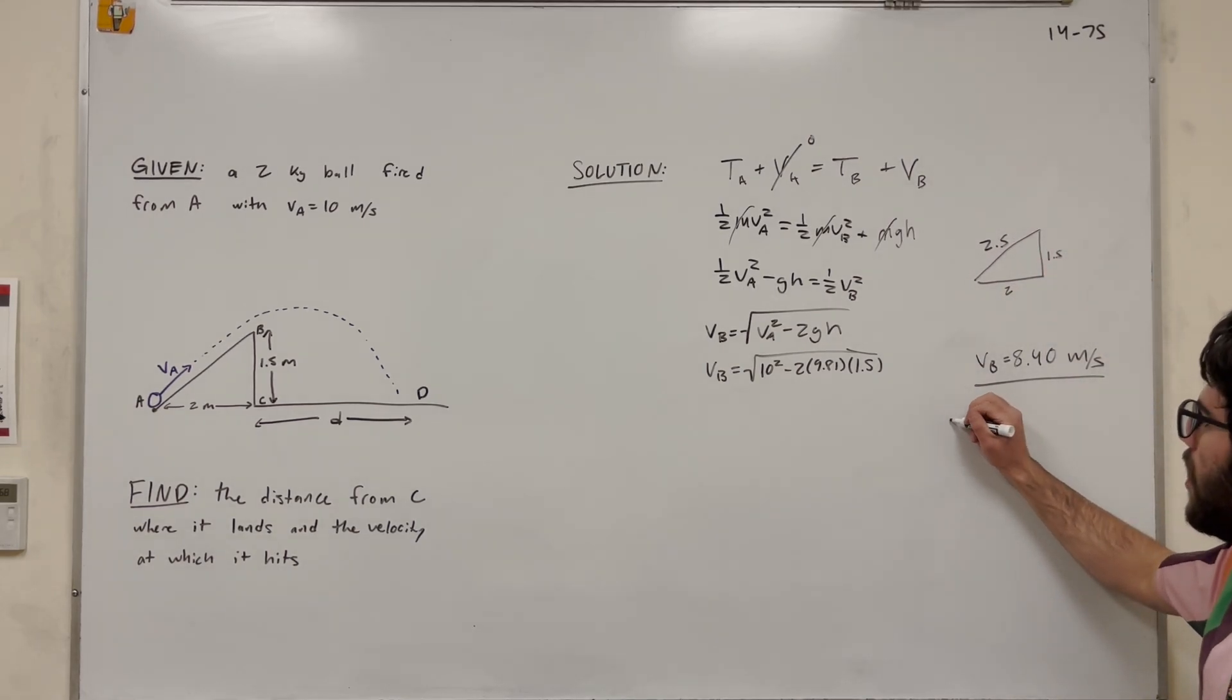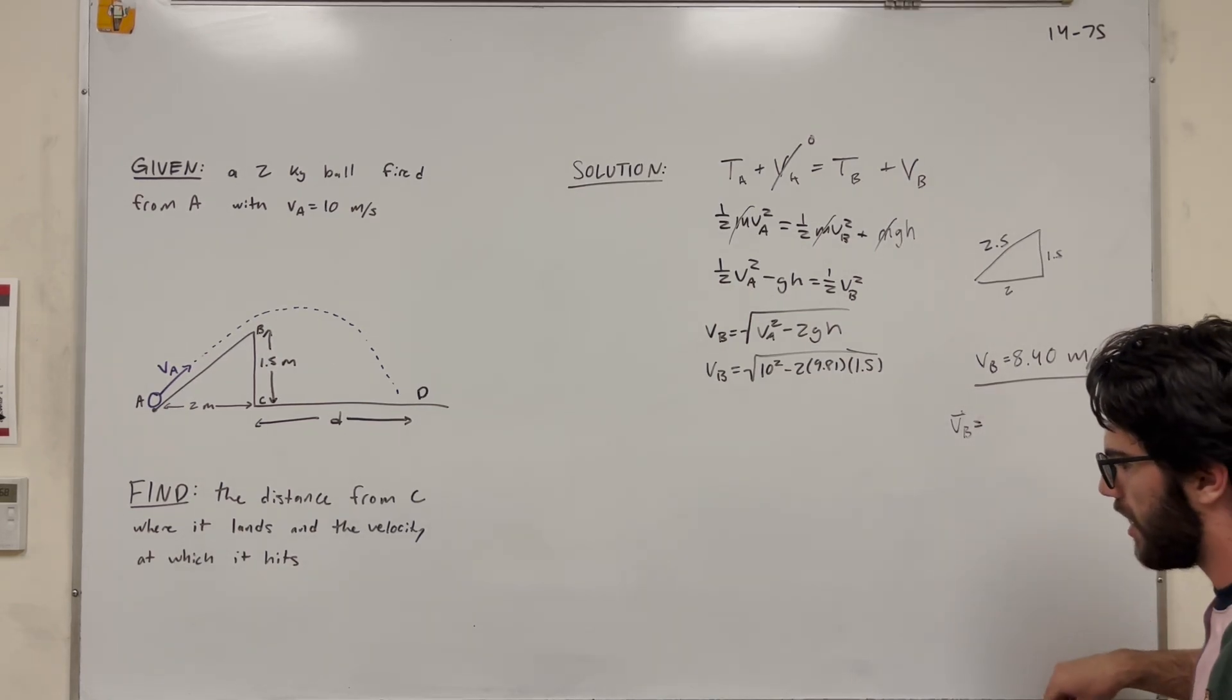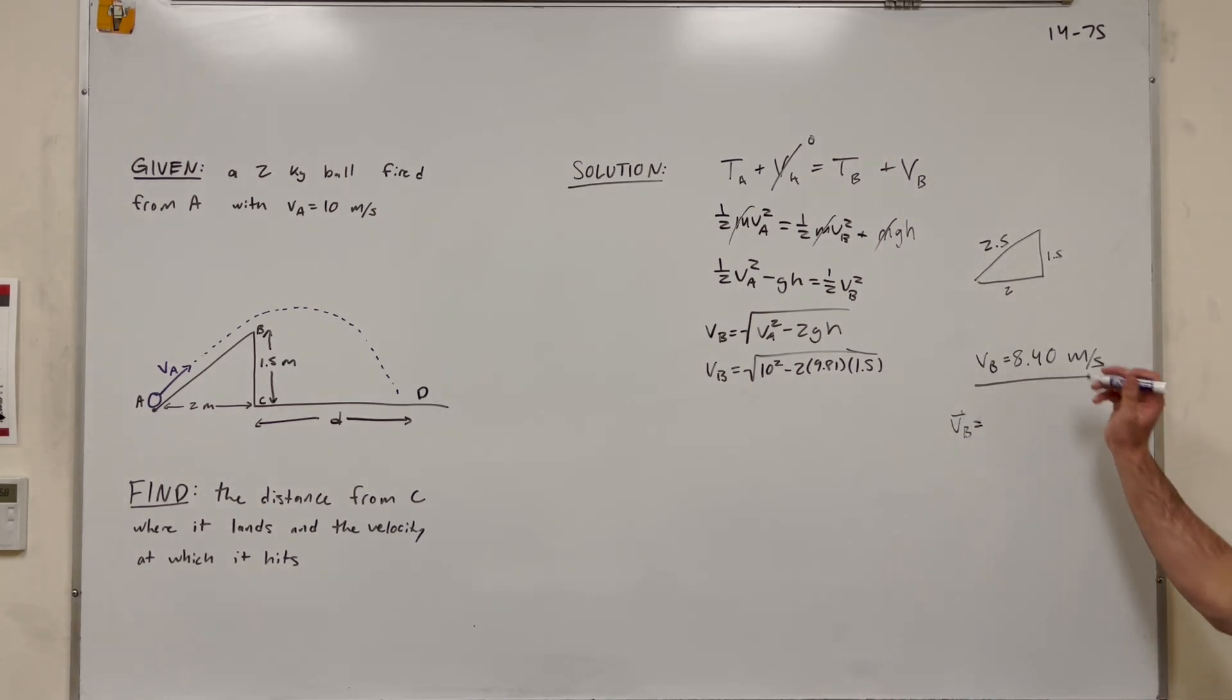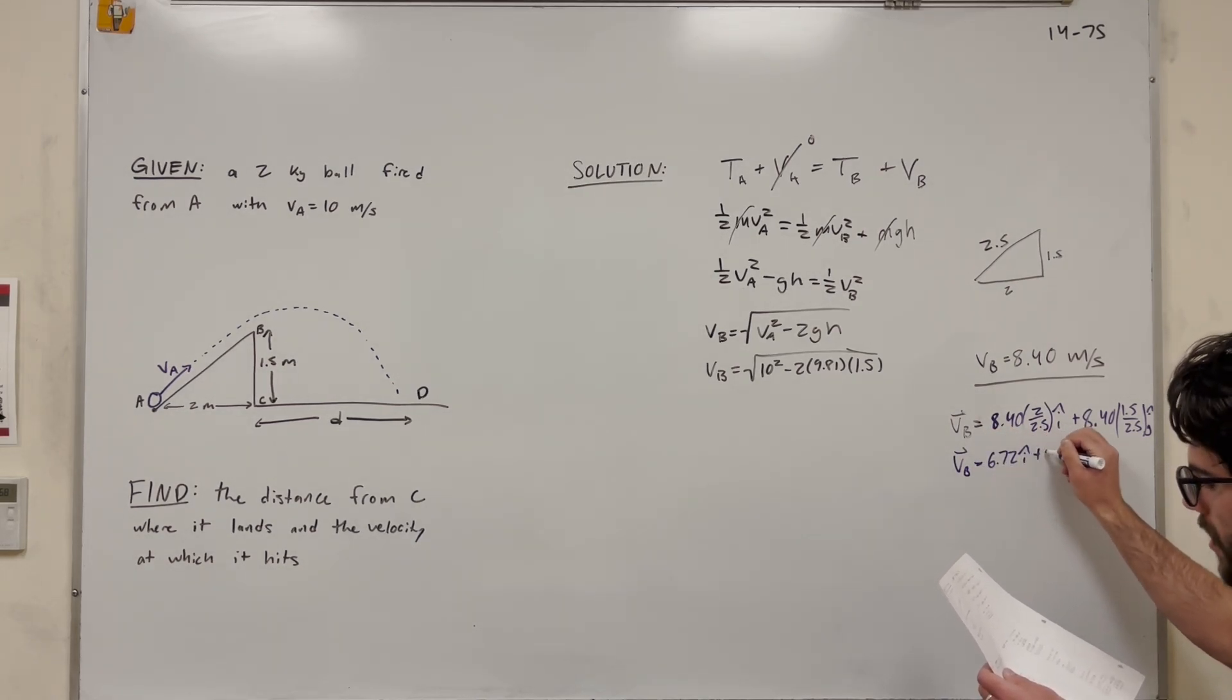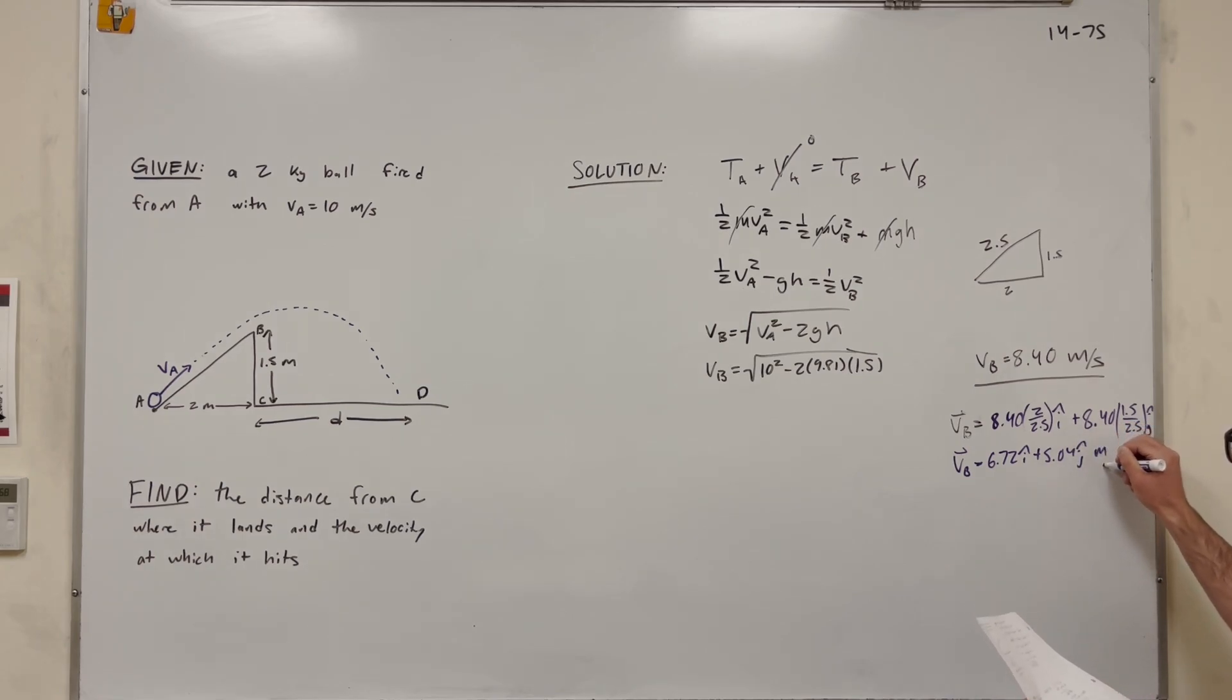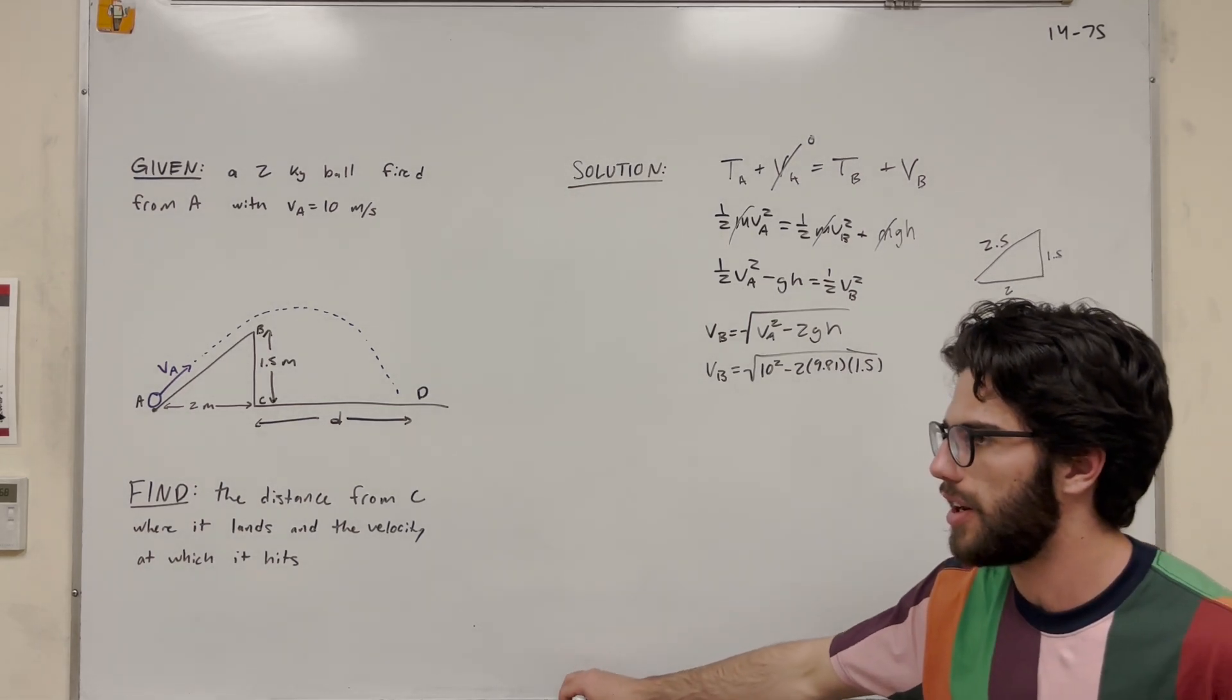So if we want to break this velocity B vector up, we're going to take the magnitude, 8.40, and multiply it by the ratio of 2 over 2.5. And this is our I component. And then our J component is going to be, again, 8.40, but then it's going to be 1.5 over 2.5 J. So you do this to get that velocity B as a vector is equal to 6.72i plus 5.04 J meters per second. So this is how we're going to use our kinematics equations.